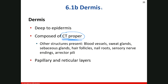The dermis has the three remaining tissue types. That includes connective tissue — which is areolar connective tissue, adipose connective tissue, and dense irregular connective tissue. It's also going to have muscle tissue in the form of the erector pili muscle, and it's going to have nervous tissue, like our sensory nerve endings.